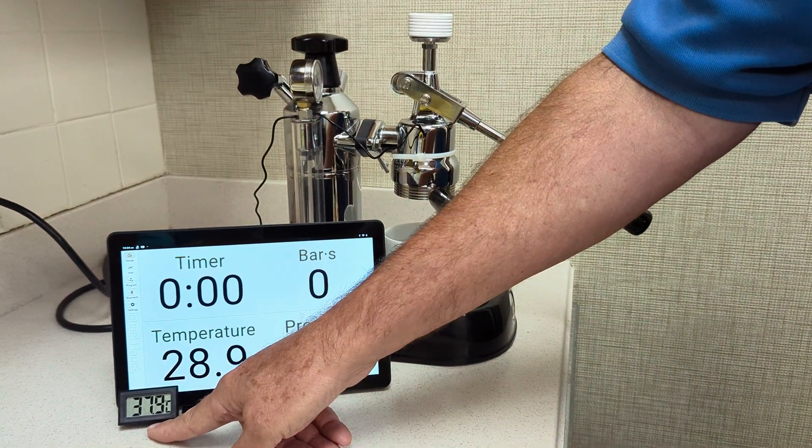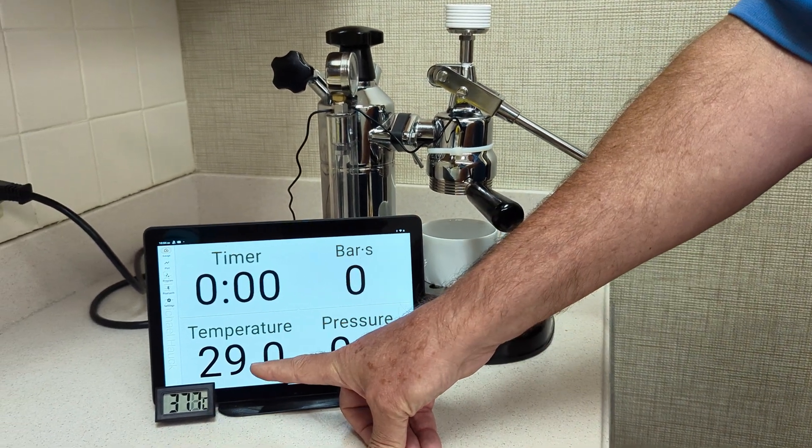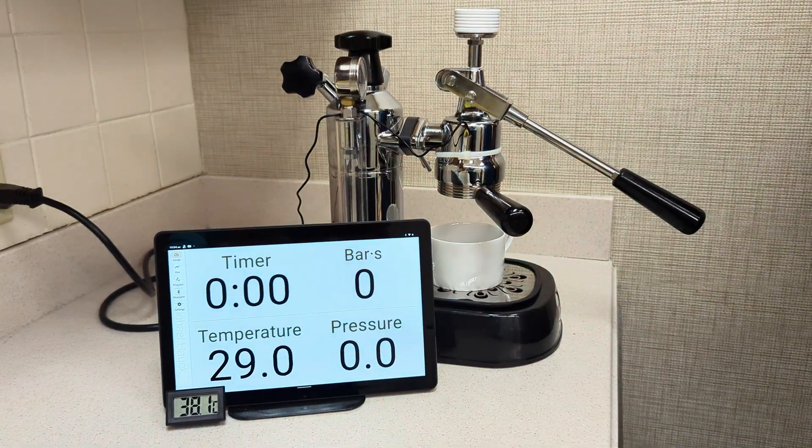And I also have a traditional temperature probe just strapped here to the outside of the group head. That's shown right here. It's showing 37 degrees Celsius. And then the inside of the group head is showing 29 degrees Celsius.